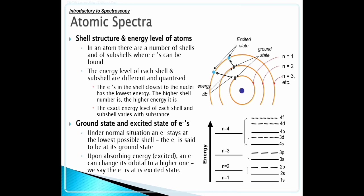Ground state and excited state of electrons. Under normal situation, an electron stays at the lowest possible energy. The electron is said to be at its ground state. Upon absorbing energy, an electron can jump its orbital to a higher one. We say the electron is at its excited state.